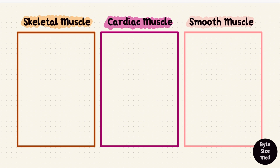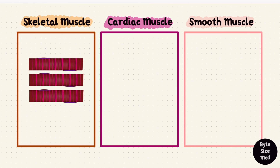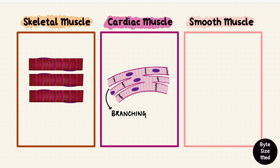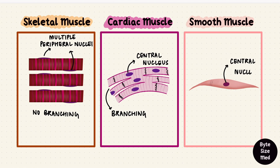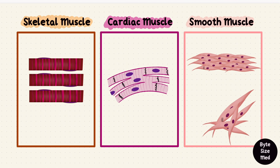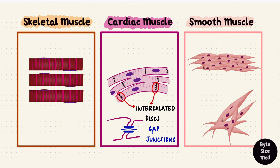Both skeletal and cardiac muscles have cylindrical fibers, but cardiac muscles have branches while skeletal muscles don't. Smooth muscle cells are spindle shaped. Skeletal muscles have multiple peripheral nuclei in each fiber. Cardiac muscle cells have one or two central nuclei, and smooth muscle cells have a single central nucleus. The cells in cardiac muscle are joined together end to end by anchoring cell junctions called intercalated discs.